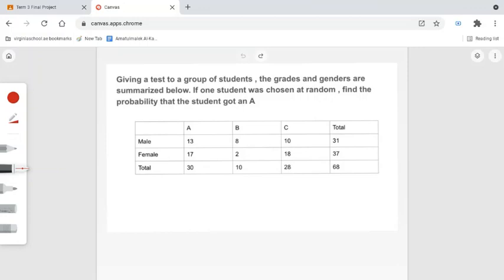So we want to find the probability that a random student received an A. Looking at the table, notice how this column here tells us the number of A students. There were a total of 30 A students, 13 of which were male and 17 which were female.